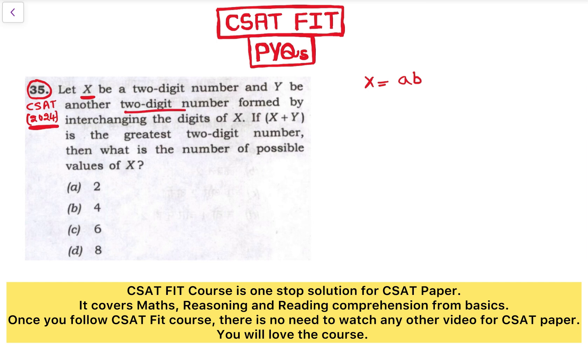And Y is another two-digit number formed by interchanging the digits of X. So by interchanging, Y is also two-digit. Interchanging determines a becomes b and b becomes a, so it is ba.